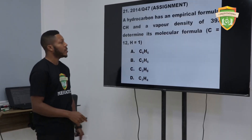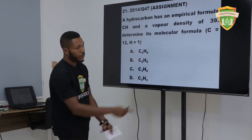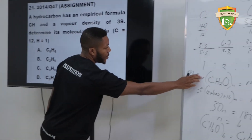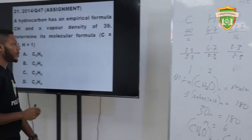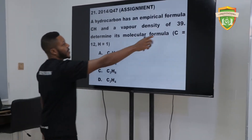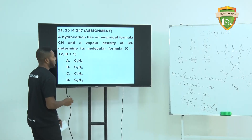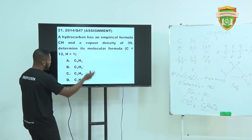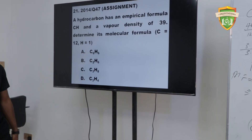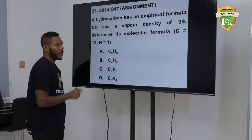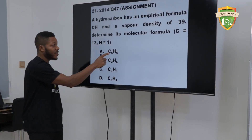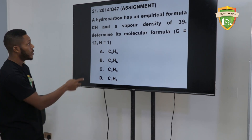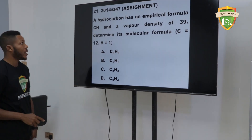The next question is a hydrocarbon — follow the same procedure. Multiply 39 by 2: CH equals 13, so 39 times 2 gives 78. When you solve it properly, the answer will be A — C6H6. That is your assignment number two. Try that at home and you'll get the answer.